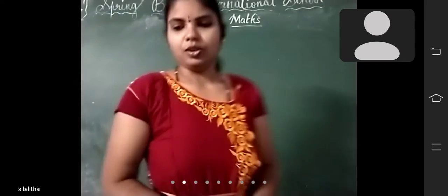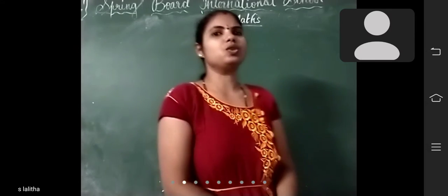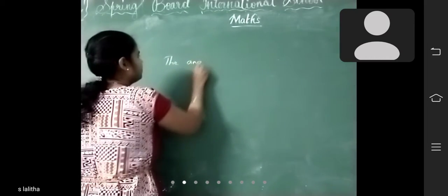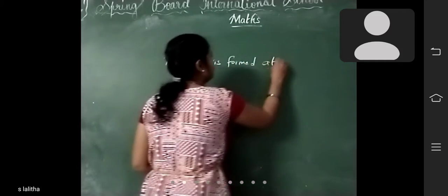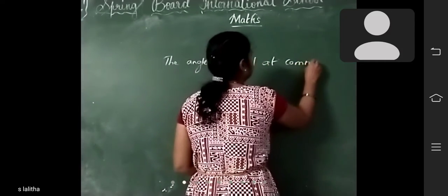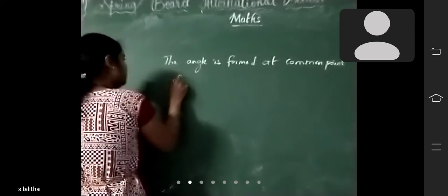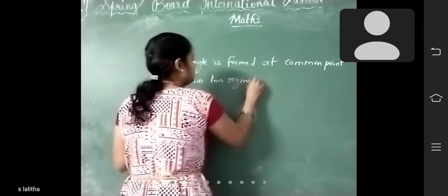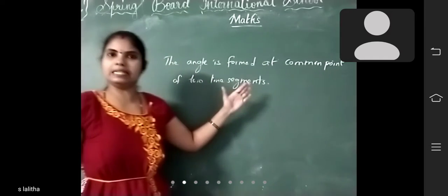Good morning children. So in the previous class, what did we learn? We learnt about angles. The angle is formed at the common point of two line segments.